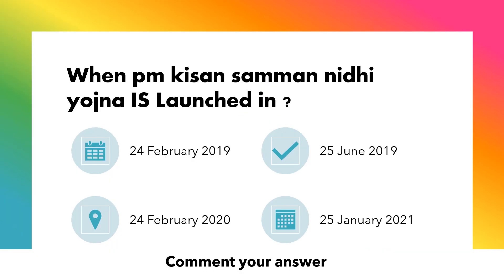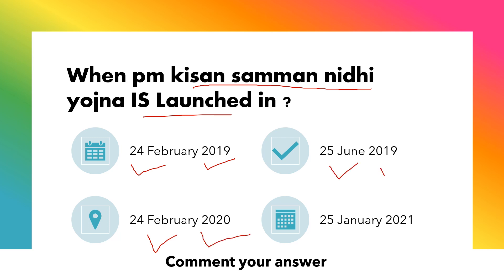Before starting this video, I will ask one question and you have to comment your answer. When was the Pradhan Mantri Kishan Samman Nidhi Yojna launched? First option: 24 February 2019, second option: 24 February 2020, third option: 25 June 2019, fourth option: 25 January 2021. Comment your answer in the comment box.